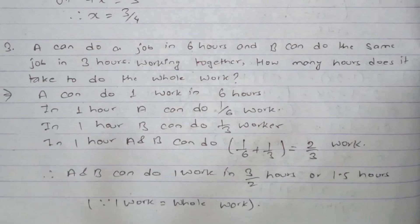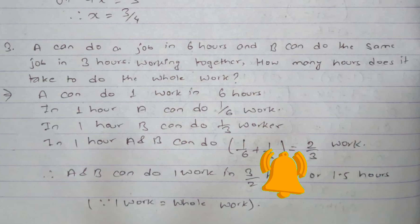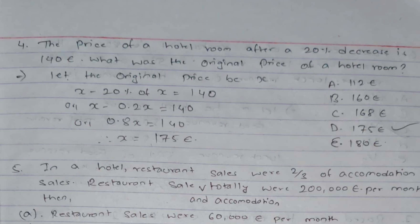Question 3 is from time and work. A can do a job in 6 hours, B can do the same job in 3 hours. Working together, how many hours does it take? A does 1/6 of the work per hour, B does 1/3 per hour. Together: 1/6 + 1/3 = 2/3 of the work per hour. Therefore they complete the whole work in 3/2 = 1.5 hours.